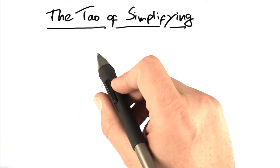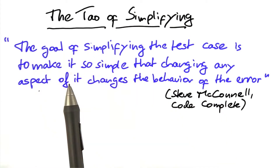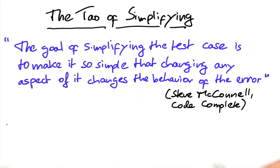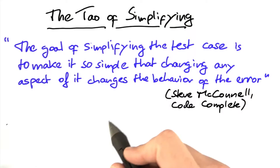To put it with Steve McConnell, the goal of simplifying the test case is to make it so simple that changing any aspect of it changes the behavior of the error. Or, in our words, to make it so simple that every aspect in it is relevant.